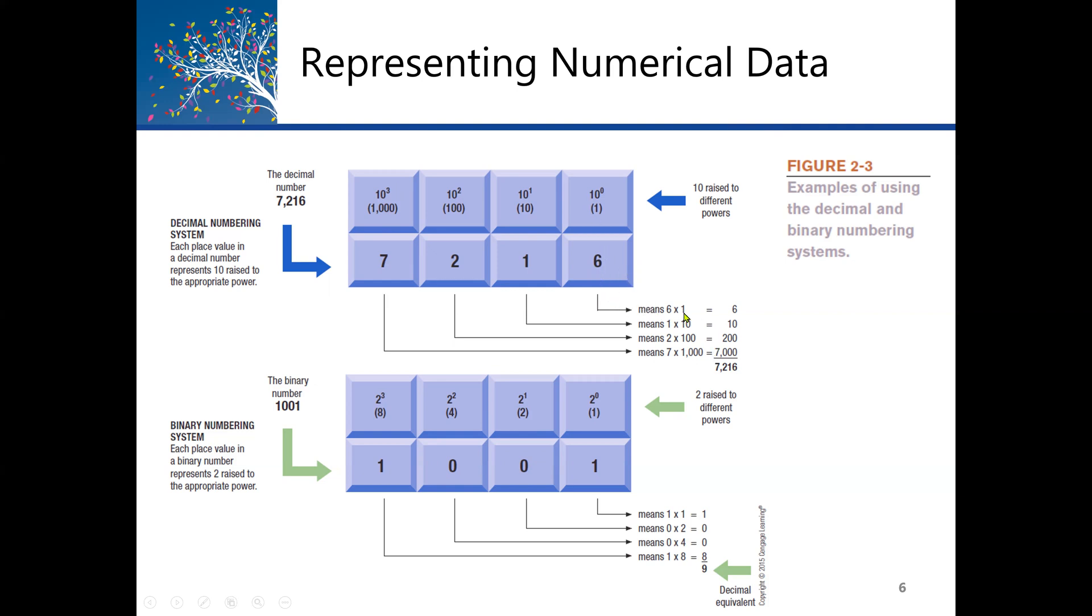Six will be ten to the power zero. Then the next one will be one, so ten to the power one. Why are we using base ten? Because this is a decimal number system. We have ten digits, so the base is ten. Seven will be ten to the power three, which is thousand. When we add all this, for example, the first six will be six times one because ten to the power zero is one. Then we have one times ten to the power one, which is ten. Then we have two times ten to the power two, so it will be two times one hundred. Seven times ten to the power three, which is one thousand. When we add all four digits, we get 7,216.